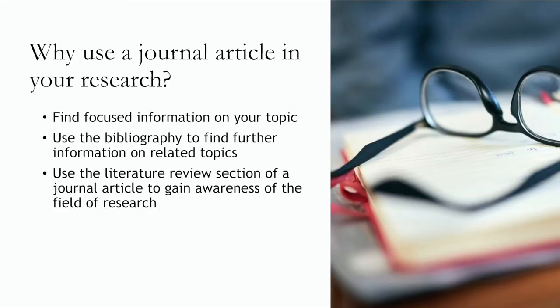Journal articles are more focused than entries in something like an encyclopedia or a book. You may want to use a journal article to build upon the foundational knowledge of your research topic and gain more focused insight. Journal articles should include sources in a bibliography, which you may use to identify other sources on your topic. They often contain a literature review at the beginning that summarizes existing knowledge, helping you identify key voices in the discipline and areas where you may need to learn more.